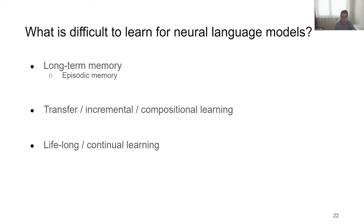I spent time analyzing what is difficult to learn for neural language models. N-grams learn much slower from data than humans, and neural networks are somewhere between. We can wonder what relationships neural networks cannot learn. With infinite data, even n-grams can learn everything — as Claude Shannon claimed in the 1950s.